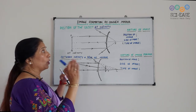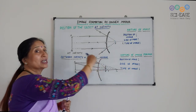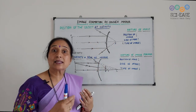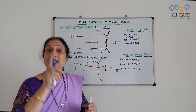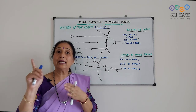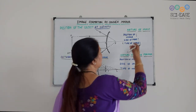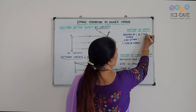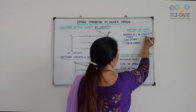So what will be the position of the image? It is at the principal focus, behind the mirror. What will be the size? It is highly diminished or point-sized. The type of image will be virtual and erect. In the case of a convex mirror, a virtual and erect image is always formed — this you must remember. So the image is right here at F, behind the mirror.